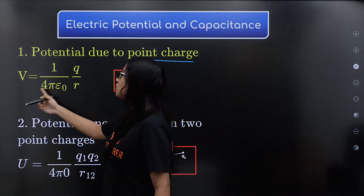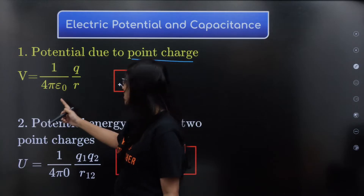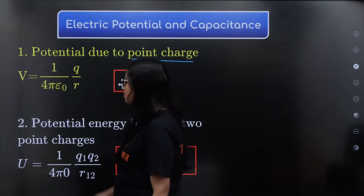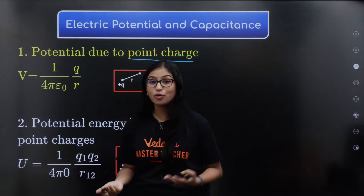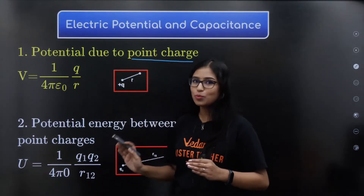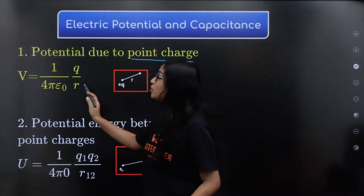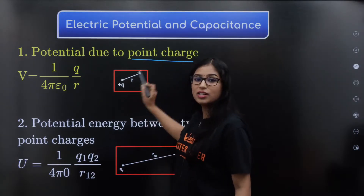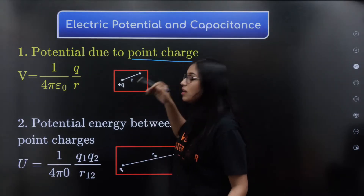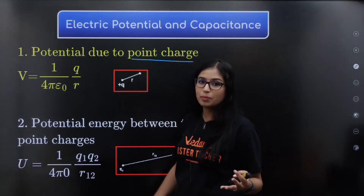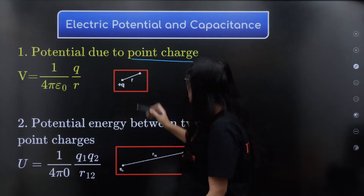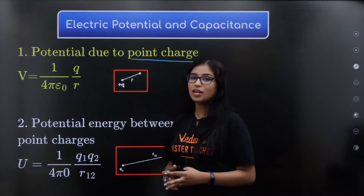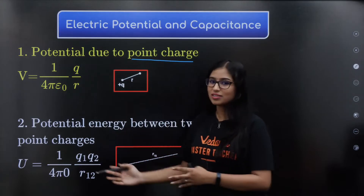V is equal to 1 divided by 4πε₀ into q divided by r. This is the potential due to a point charge. At a particular point charge, the potential depends on the charge q and the distance r from the charge.